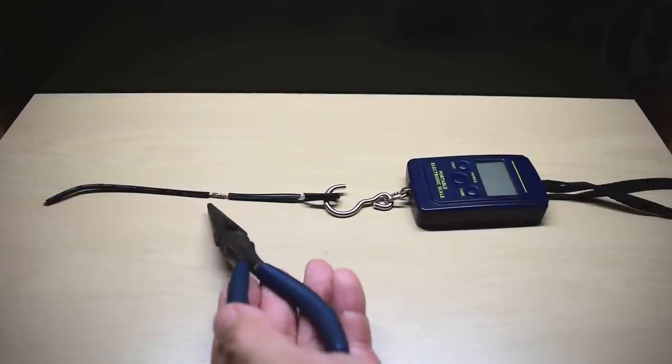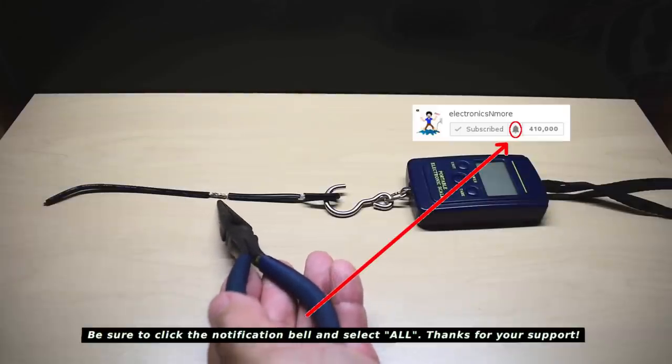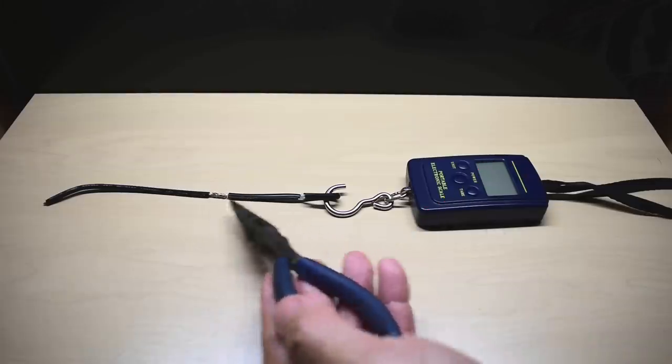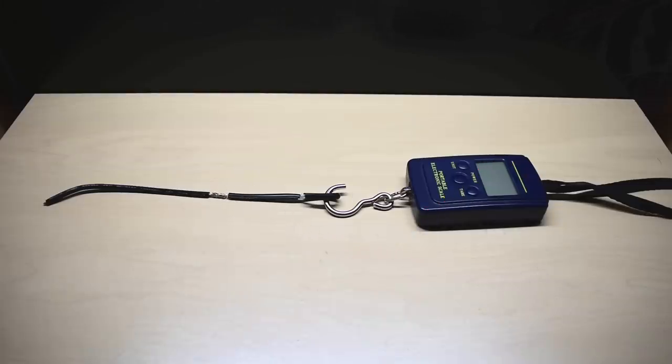As you just saw, I applied 10 pounds of force to this connection, and it's exactly the way it was. So not a problem at all, just by twisting the ends together, folding it over, and putting on some heat shrink with glue.